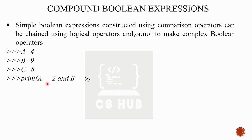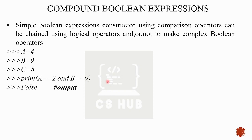We can write: print(a == 2 and b == 9). Here, a == 2 is one boolean expression and b == 9 is a second boolean expression, combined with the logical operator 'and'. Since a equals 4, a == 2 is False. b == 9 is True. So False and True gives False.